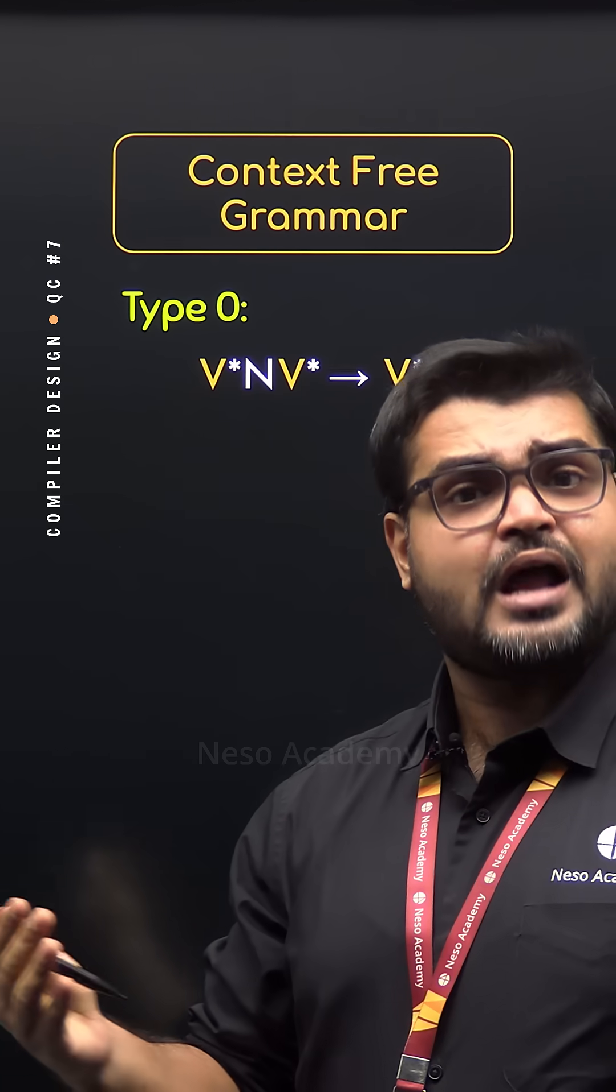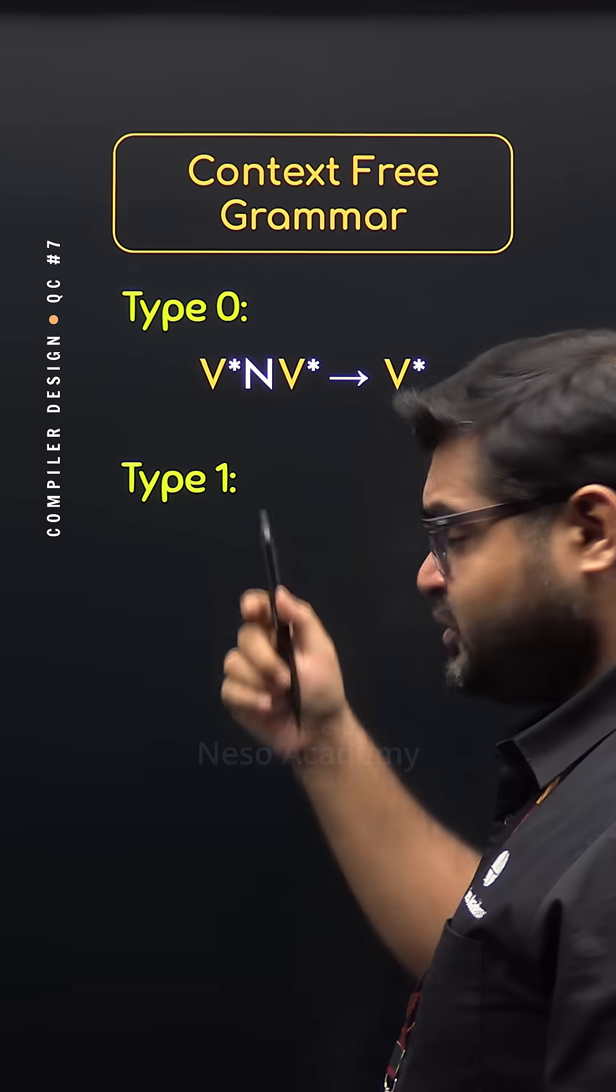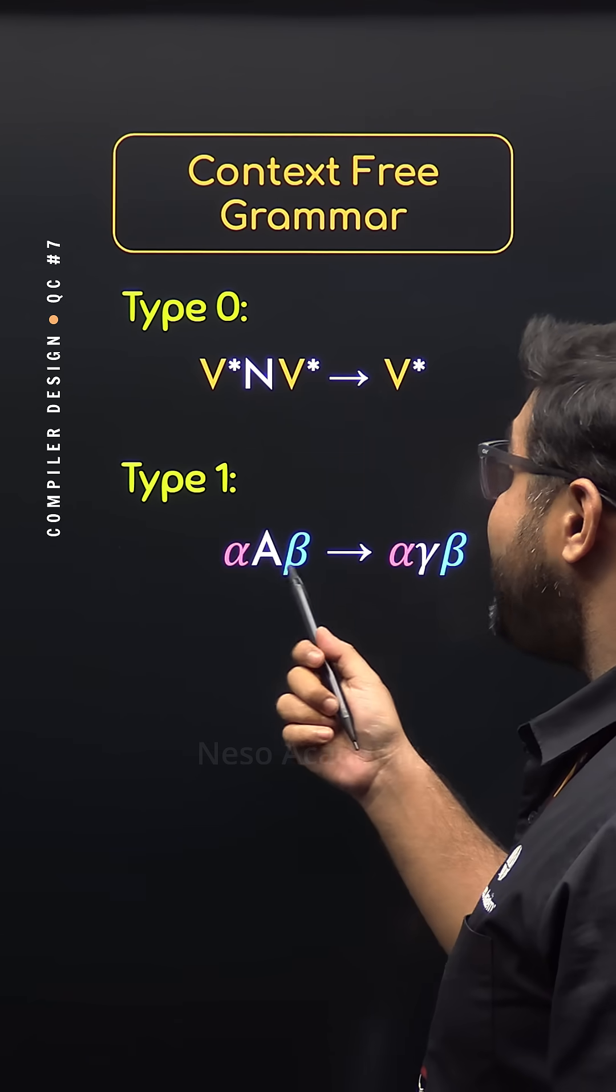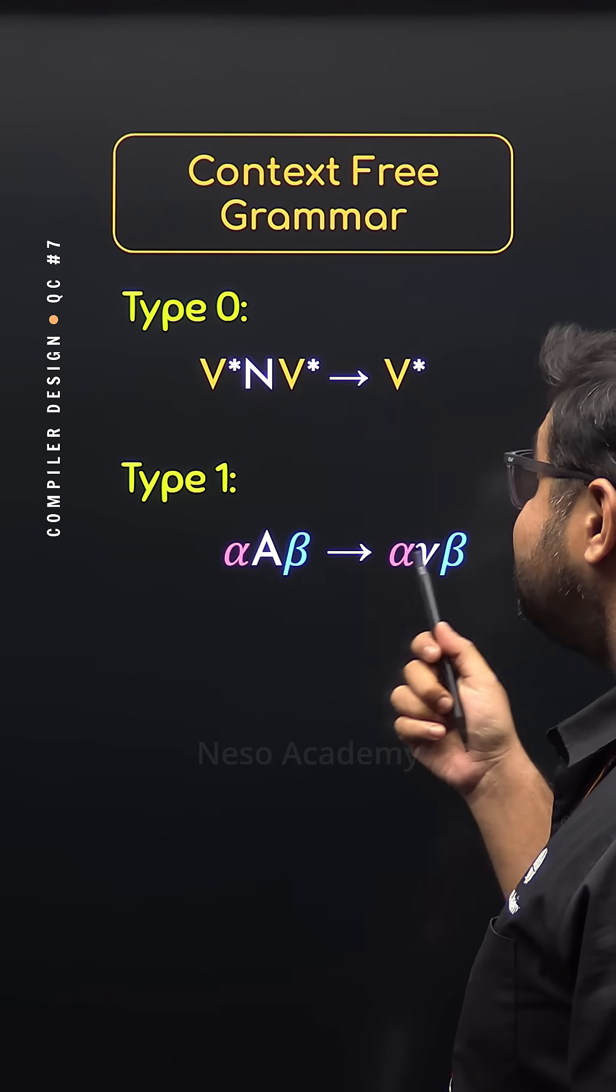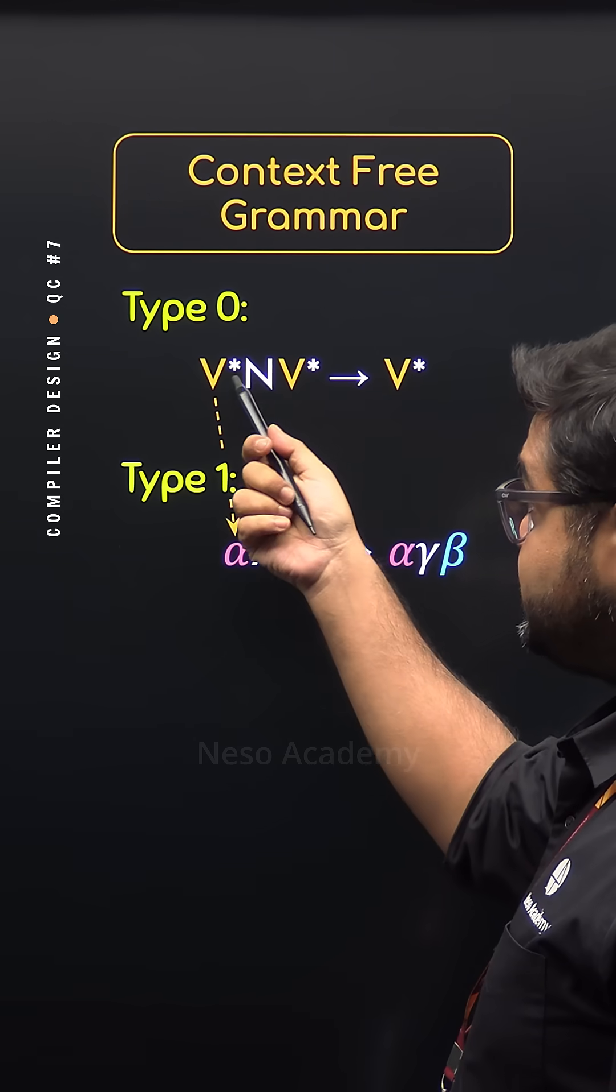In case of Type 1, we already know the production rules are of the form αAβ can be rewritten as αγβ. So this α is coming from V*, A being the non-terminal is coming from N, and β is coming from V*.